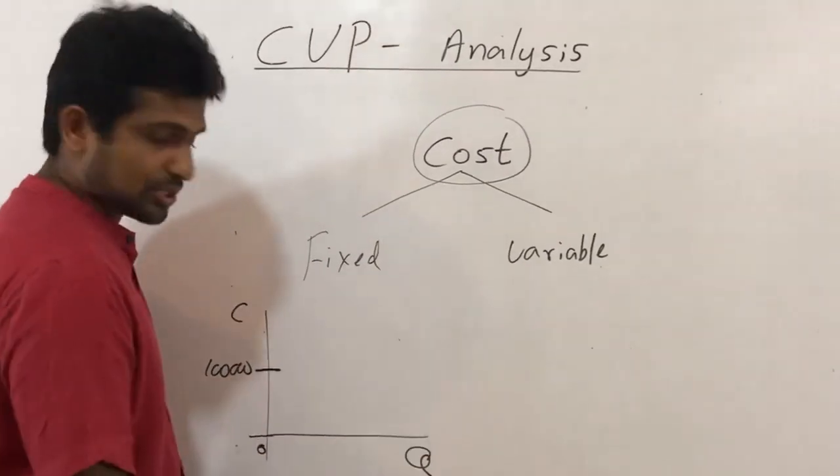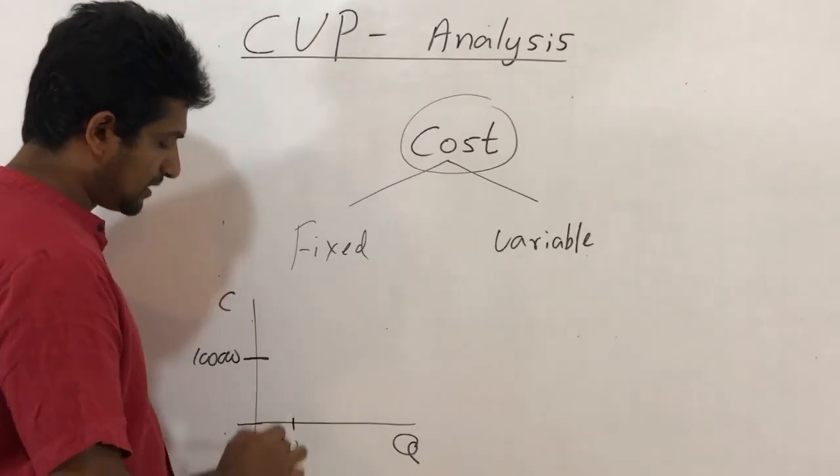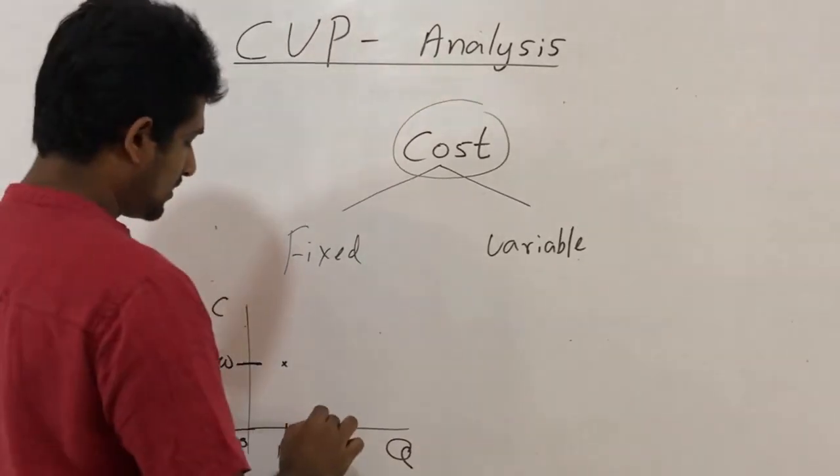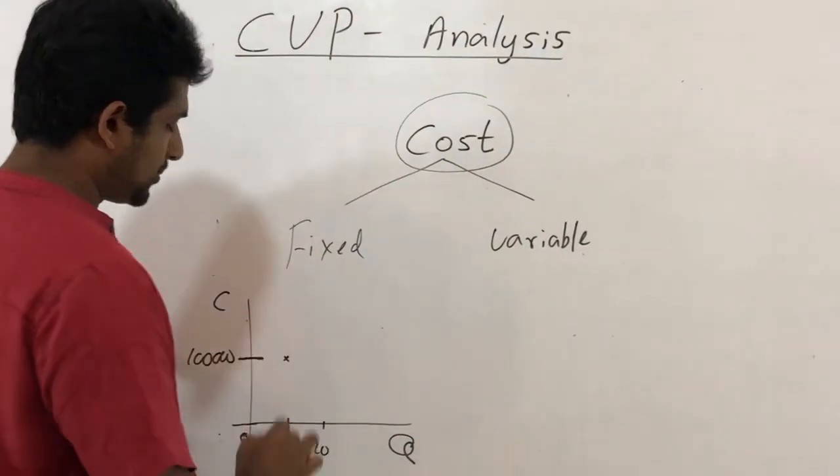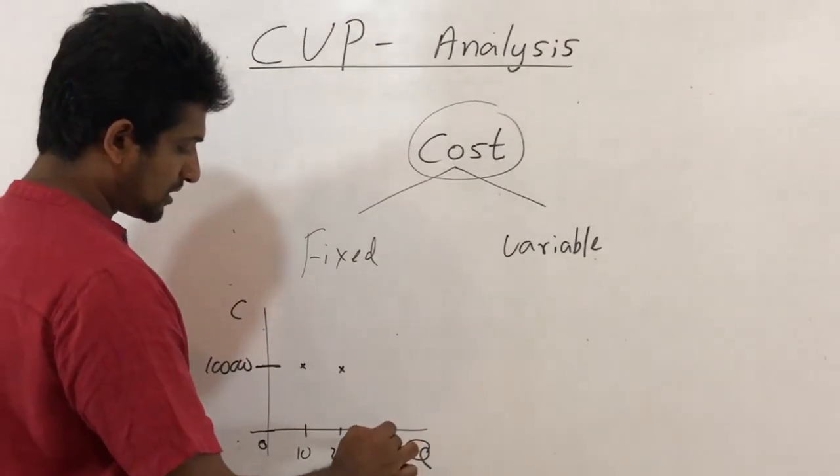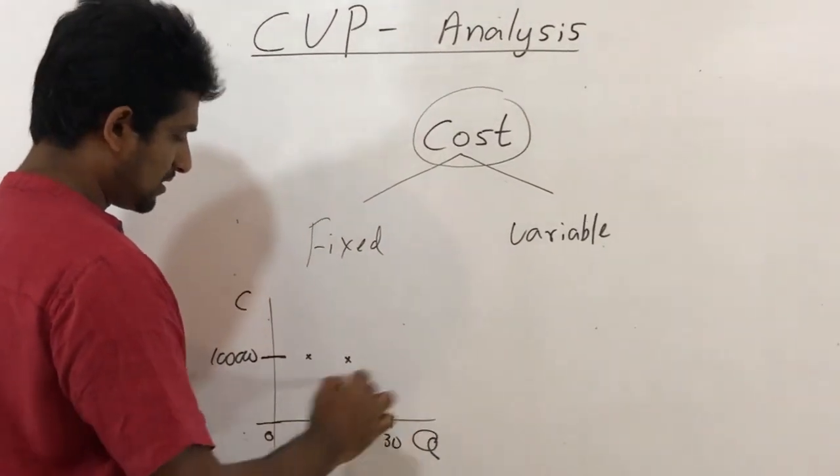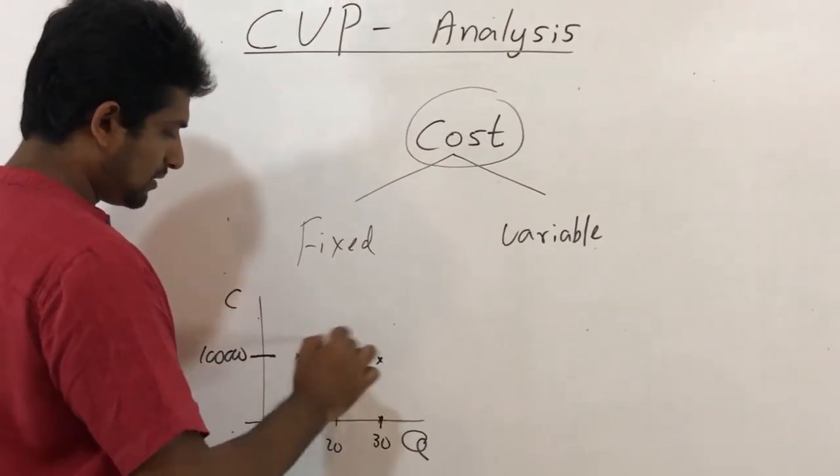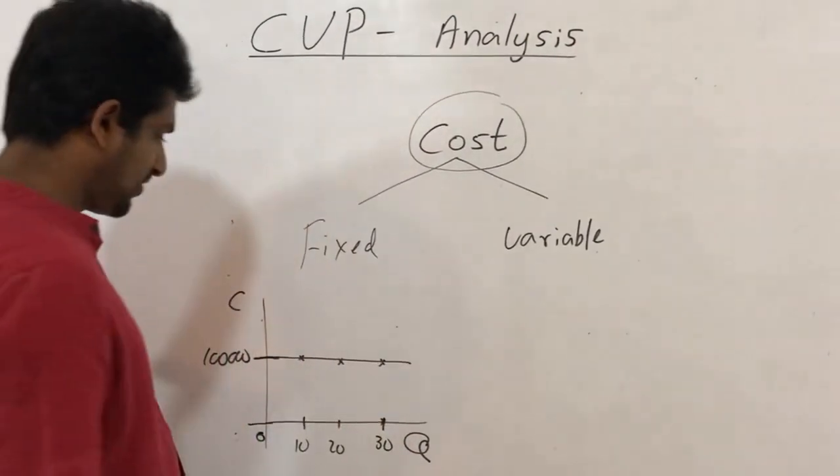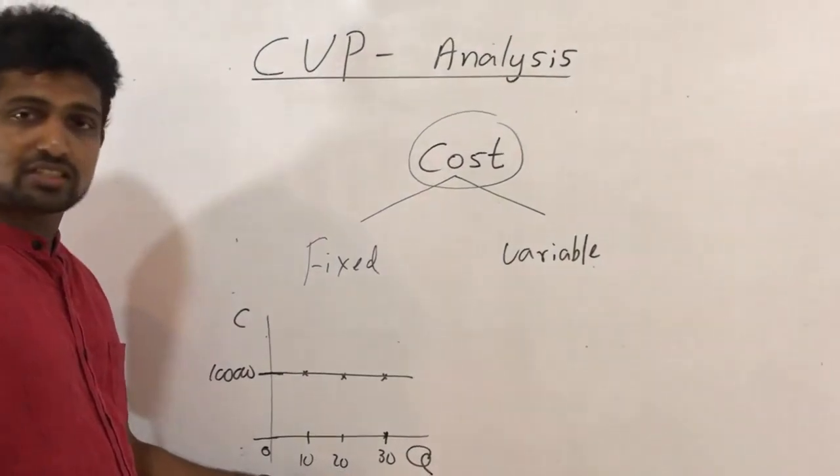When you increase the production, say if you are manufacturing ten garments, yet your rent doesn't change. If the level of production is 20 units, also the cost is same. If the level of production is 30, also the cost is same. Therefore you can see the fixed cost curve which is parallel to the Q axis.